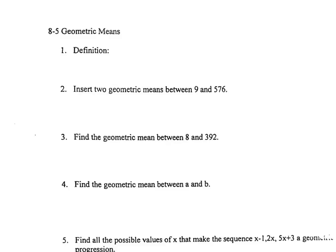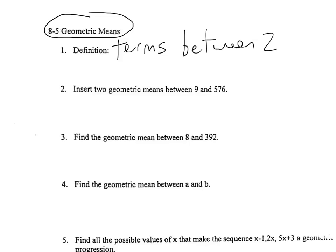Hello there. Hopefully your quiz went well. You have about six examples here I'm going to do on this video for the notes, and it's all about geometric means. We did problems with arithmetic series where we talked about arithmetic means — numbers between terms in an arithmetic sequence — and that's what geometric means are. It just happens to deal with a geometric sequence instead. By definition, geometric means are terms between two given terms of a geometric sequence.